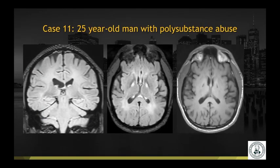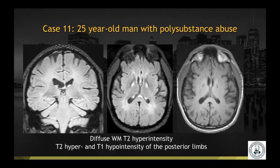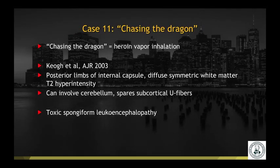Case number eleven: a 25-year-old man with polysubstance abuse. Diffuse white matter T2 hyperintensity, very ill-defined, as well as T2 hyperintensity and T1 hypointensity of the posterior limbs of the internal capsules. This was a case of chasing the dragon, or inhalation of heroin vapor. It has this typical distribution with periventricular symmetric, ill-defined, diffuse white matter abnormality with sparing of the subcortical U-fibers.